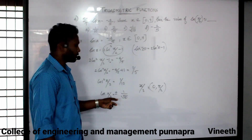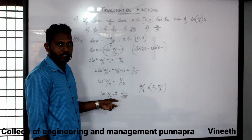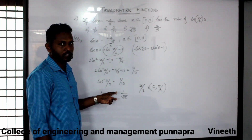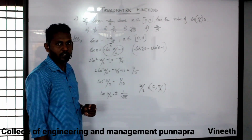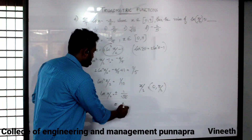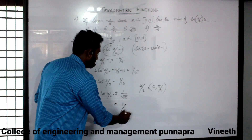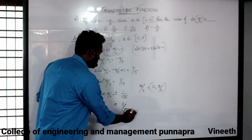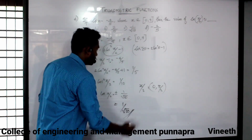When we write cos(x/2) and substitute the values, we get 1 by root 10 plus 1 by root 10.